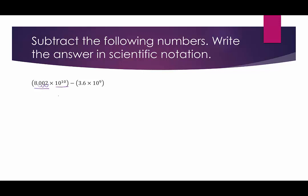We're subtracting 3.6 times 10 to the 9th. Moving the decimal 9 places to the right — one place to get past the 6 and then eight more zeros — gives 3,600,000,000. Now we're ready to subtract.